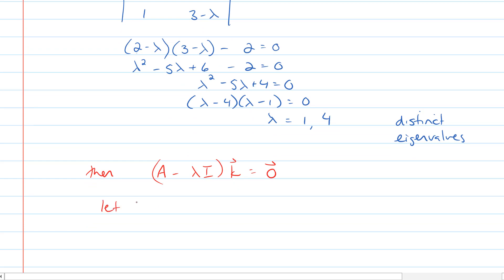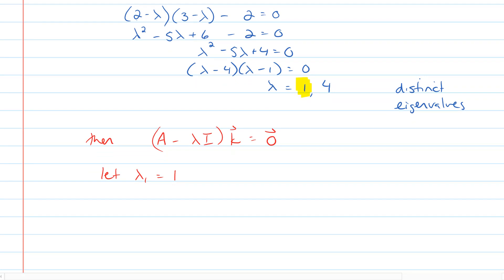So we're going to first let lambda 1 equals 1. That's our first eigenvalue that we found above. The second one is 4, and we'll do that one in a minute. Then if you put that in, basically we're subtracting our eigenvalue from the main diagonal elements. And instead of 2 and 3 on the main diagonal, we're going to get 1 and 2. The off-diagonal elements are going to be 2 and 1, as before. And we're finding out what makes this system equal to 0.